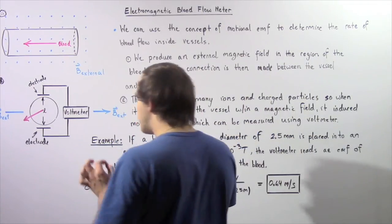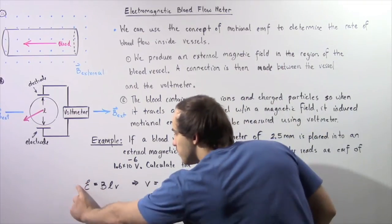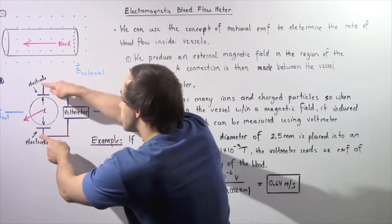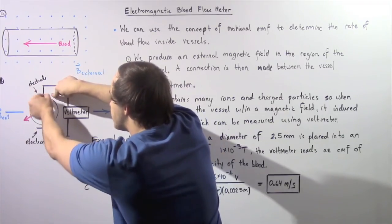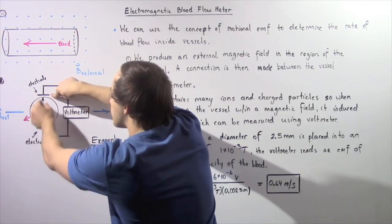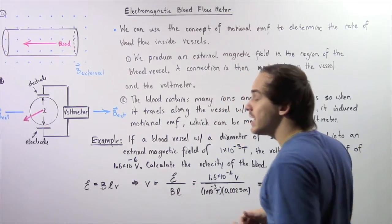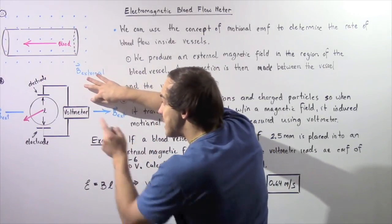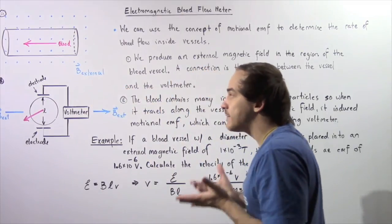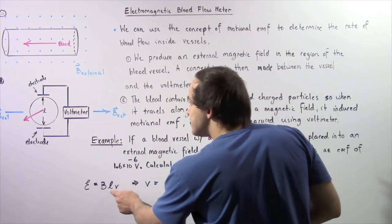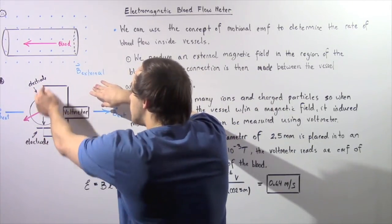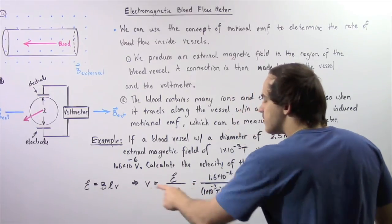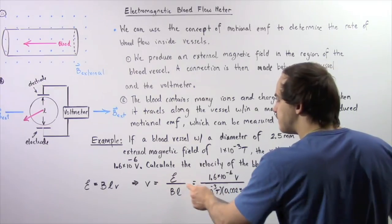We use the equation derived in the previous lecture: the Motional induced EMF equals the product of the external magnetic field B, the length L (the distance between the two electrodes, which is the diameter of the blood vessel), and the velocity of the blood. The EMF is measured using our voltmeter, B is the magnetic field we create, and L is the diameter of the blood vessel. Rearranging, the velocity equals the induced EMF divided by B times L.